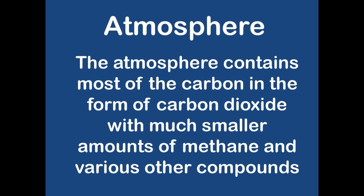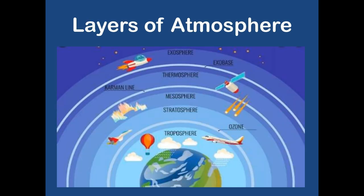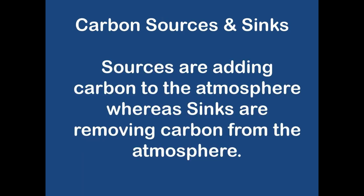Now we come to the third carbon pool — the atmosphere. The atmosphere contains most of its carbon in the form of carbon dioxide, with much smaller amounts of methane and various other hydrocarbon compounds. Although this is considerably less carbon when compared with the carbon contained in the oceans or crust, the atmospheric carbon pool is of vital importance because of its influence on the greenhouse effect and climate. The relatively small size of the atmospheric carbon pool also makes it very sensitive to disruptions caused by increases in sources or sinks of carbon. Sources are those which add carbon to the atmosphere, whereas sinks remove carbon from the atmosphere.